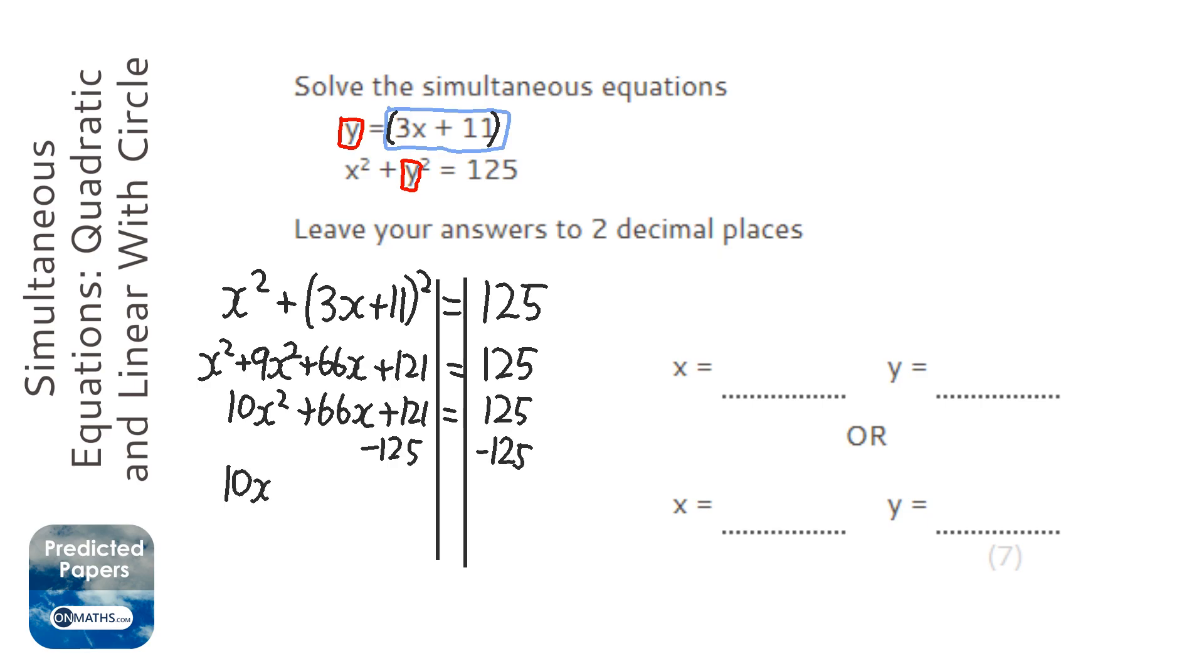So 10x squared plus 66x. And what's that? It's going to be minus 4, isn't it?